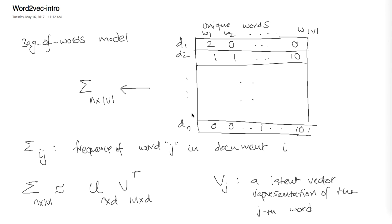Before we get into Word2Vec, let's see how word embeddings were learned before the invention of neural language models. What you see here is called the term-frequency matrix. Each row corresponds to a particular document, and the columns are the unique words in your vocabulary. Word W1 occurred twice in document D1. This is a term-frequency representation of your corpus — N documents and V vocabulary size. An interesting property is that it's going to be pretty sparse because the vocabulary is much larger than the average document length.